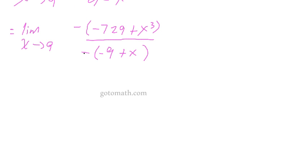Now we end up having a negative over a negative. So these are going to basically just cancel out. And I'm going to be able to rewrite this limit.